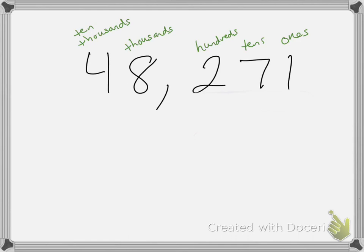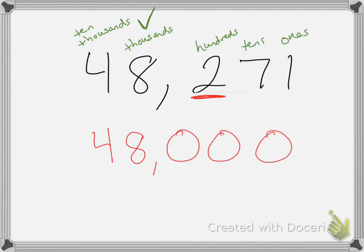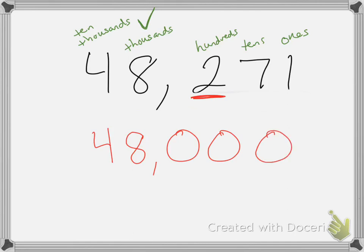Now we're going to round this number to the nearest thousands place. We put a check mark above the thousands and look to the number to the right to see if it's five or more. The number is two, and it is not five or more. So we keep the thousands place the same and everything to the left of it, and the hundreds, tens, and ones place all become zeros. So this number is 48,000. We know that because 8,271 is closer to 8,000 than it is to 9,000.